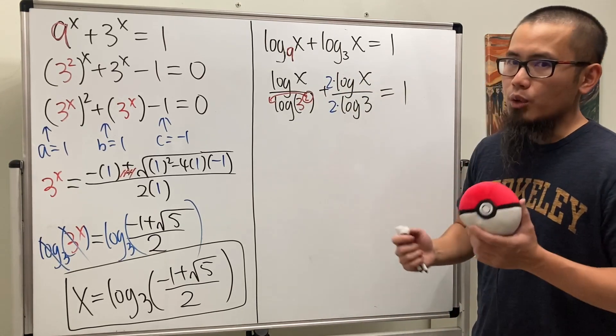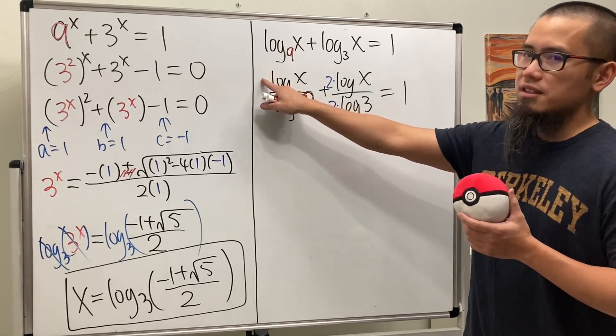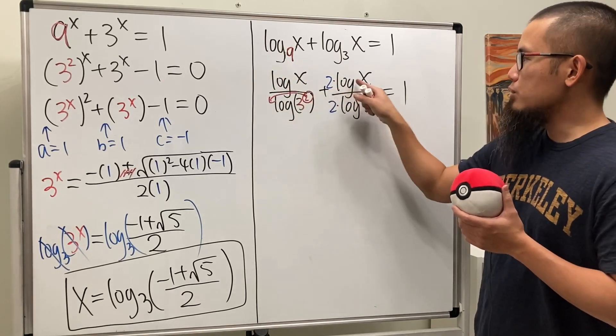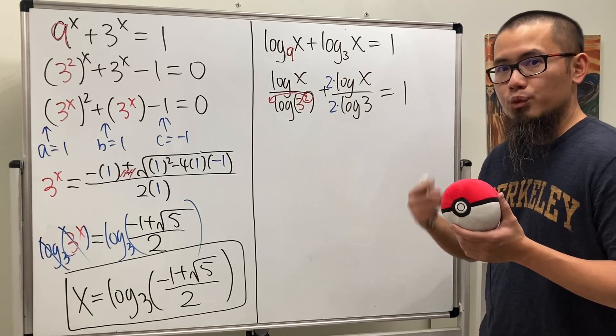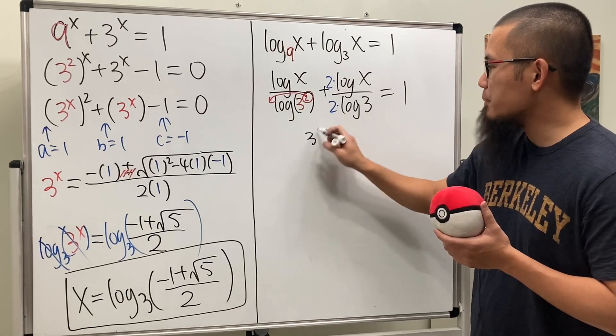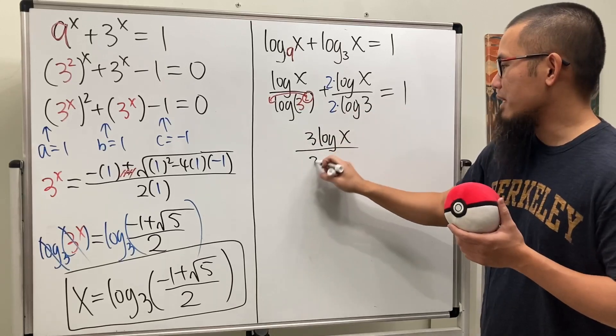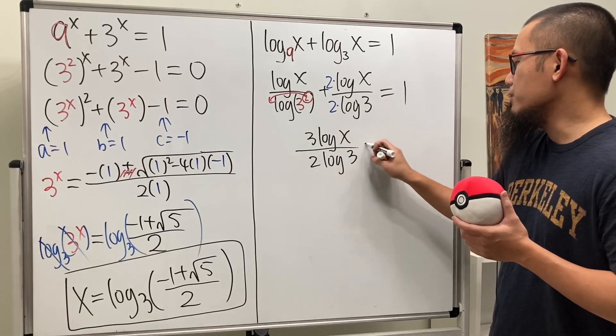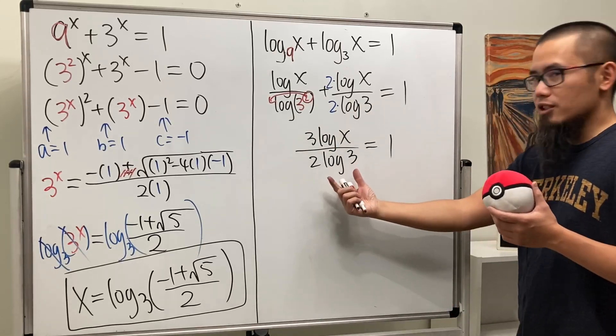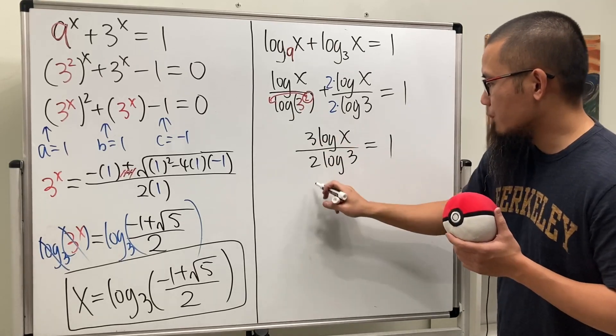This is so nice because you see, this is just 1 log of x plus 2 log of x. All together we have 3 log of x on the top, and then on the bottom of course we have that denominator like so. Then we can just multiply this on both sides and we have 3 log of x is equal to 2 log of 3.